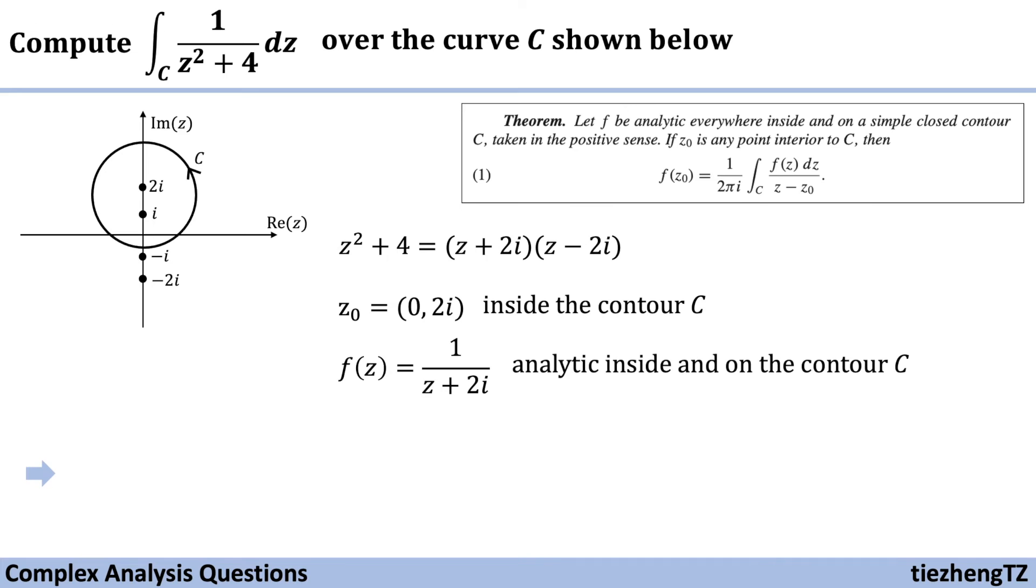So next, the integral function in the theorem, integral f(z) dz over z minus z₀ equals integral of 1 over z plus 2i over z minus z₀, which is 2i. And from the theorem, we know this function equals 2πi times f(z₀). And we just need to substitute using the z₀ value, which is 2i.